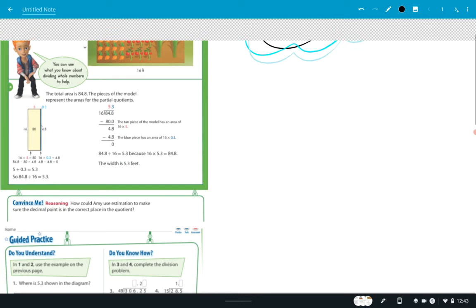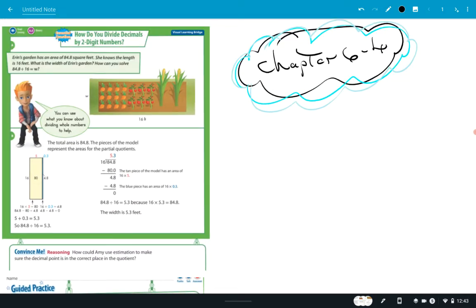They give us an example here. You're now dividing with two-digit numbers, and they show us a couple things in this example. It says Erin's garden has an area of 84.8 square feet. So the area you know is what's inside of a garden. And it says she knows the length is 16 feet, here's the length right here. And the question is, what's the width? And so they show you how they solve that. Well, it's going to be 16 into 84.8. And so what do they get? They get 5.3, and they model it for us right there also, which is kind of convenient.